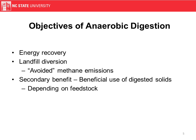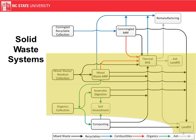A secondary benefit is using the digested solids, which depends on the feedstock coming in and the value of what's coming out — but it can be like a compost product. In a larger solid waste system, anaerobic digestion can receive organics potentially from a dedicated organics collection system or through a mixed waste MRF. You get a soil amendment out of it, and residuals go either to a landfill or through a thermal processing step.